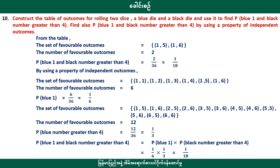Problem 3: Construct the table for rolling two dice. Find the probability of blue die showing 1 and black die showing a number greater than 4. Blue 1 and black number greater than 4, using independence outside of the table.